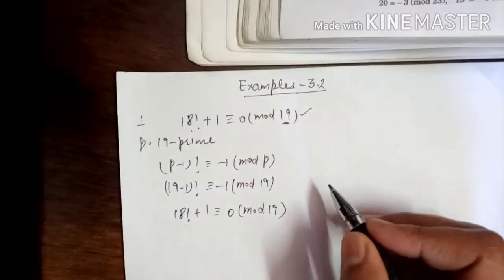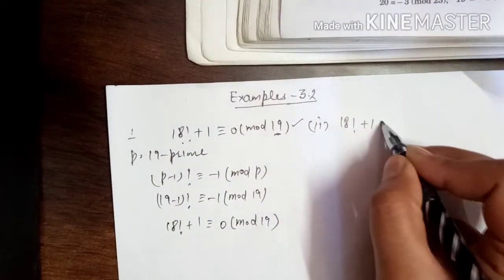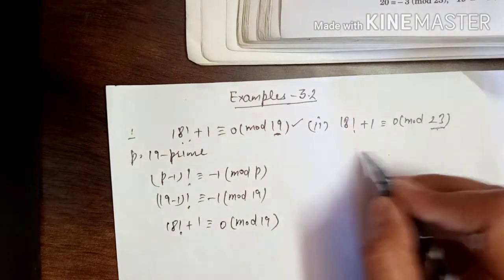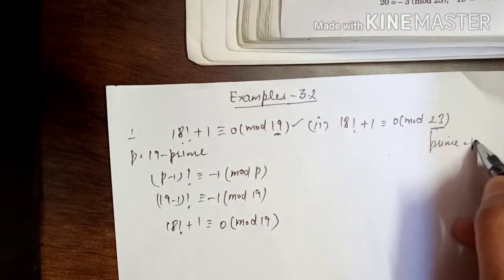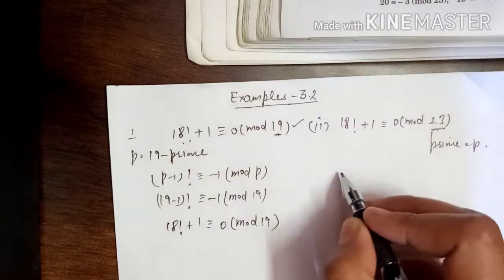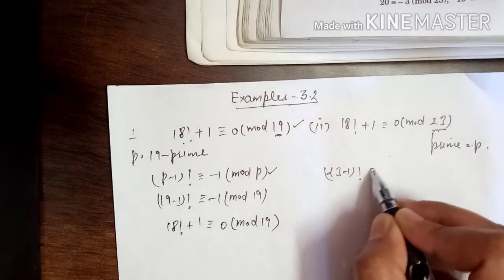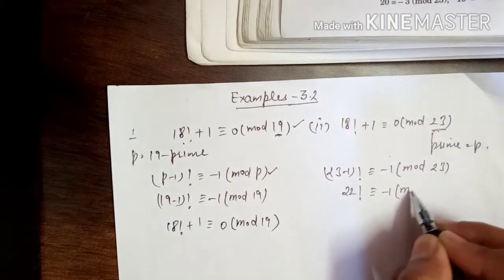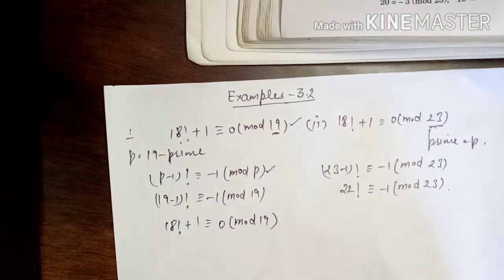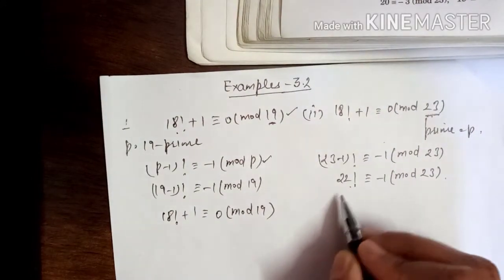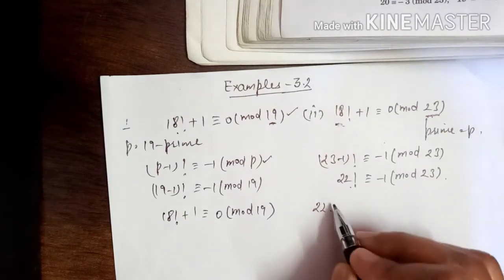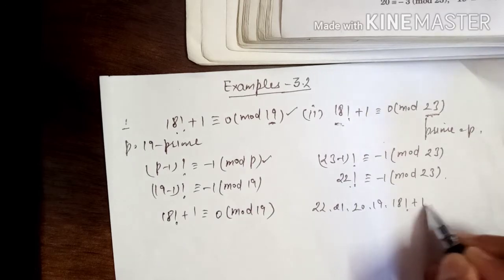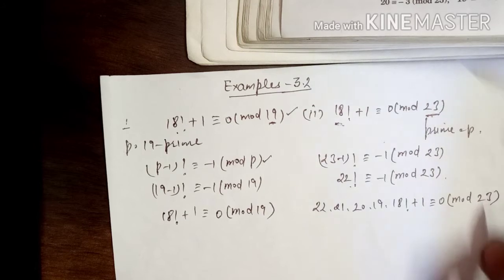Now the second part: we need to show 18! + 1 ≡ 0 (mod 23). Since 23 is also a prime number, we apply Wilson's theorem with p = 23. So 23 - 1 factorial is congruent to -1 mod 23, that means 22! ≡ -1 (mod 23).